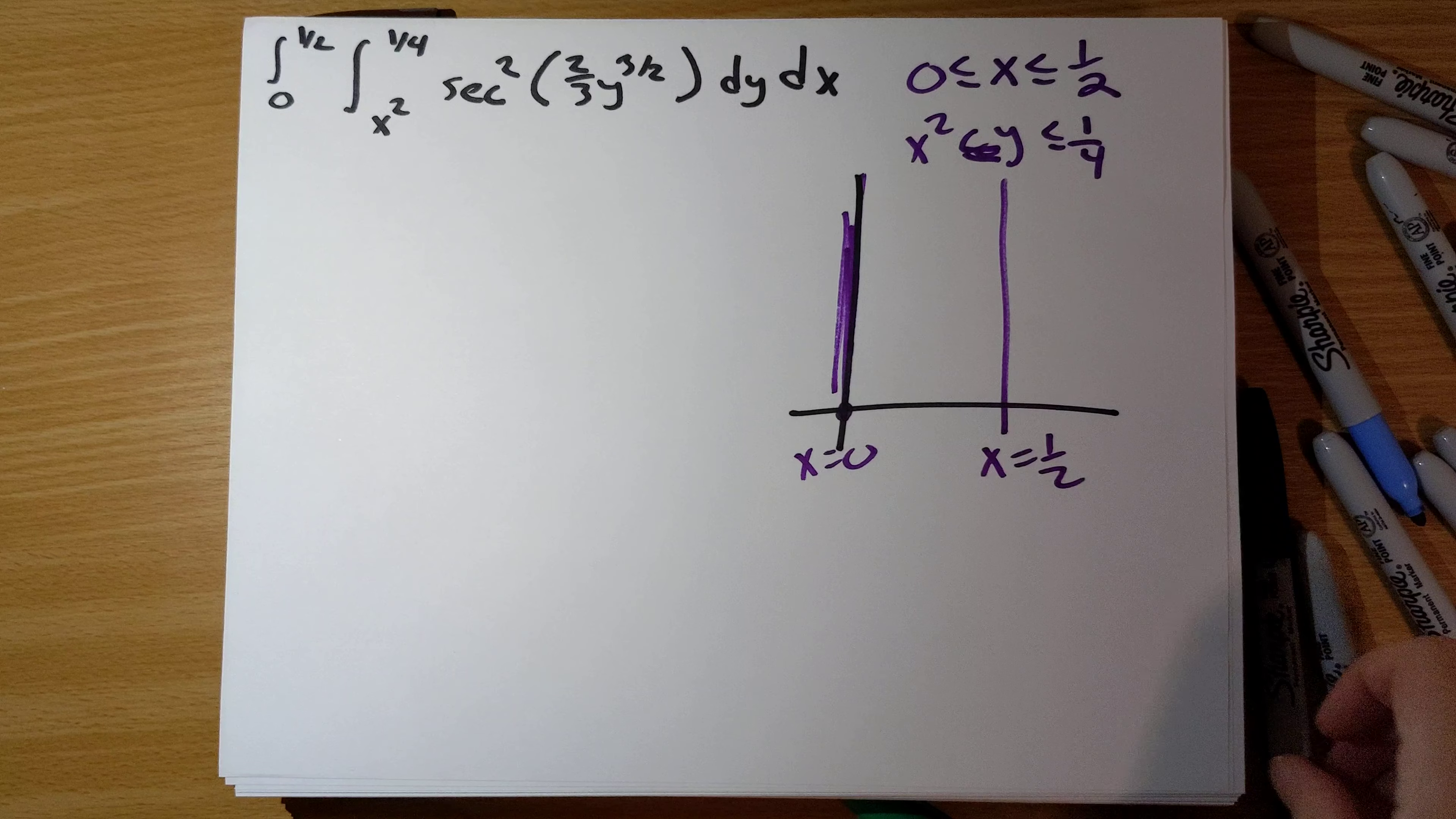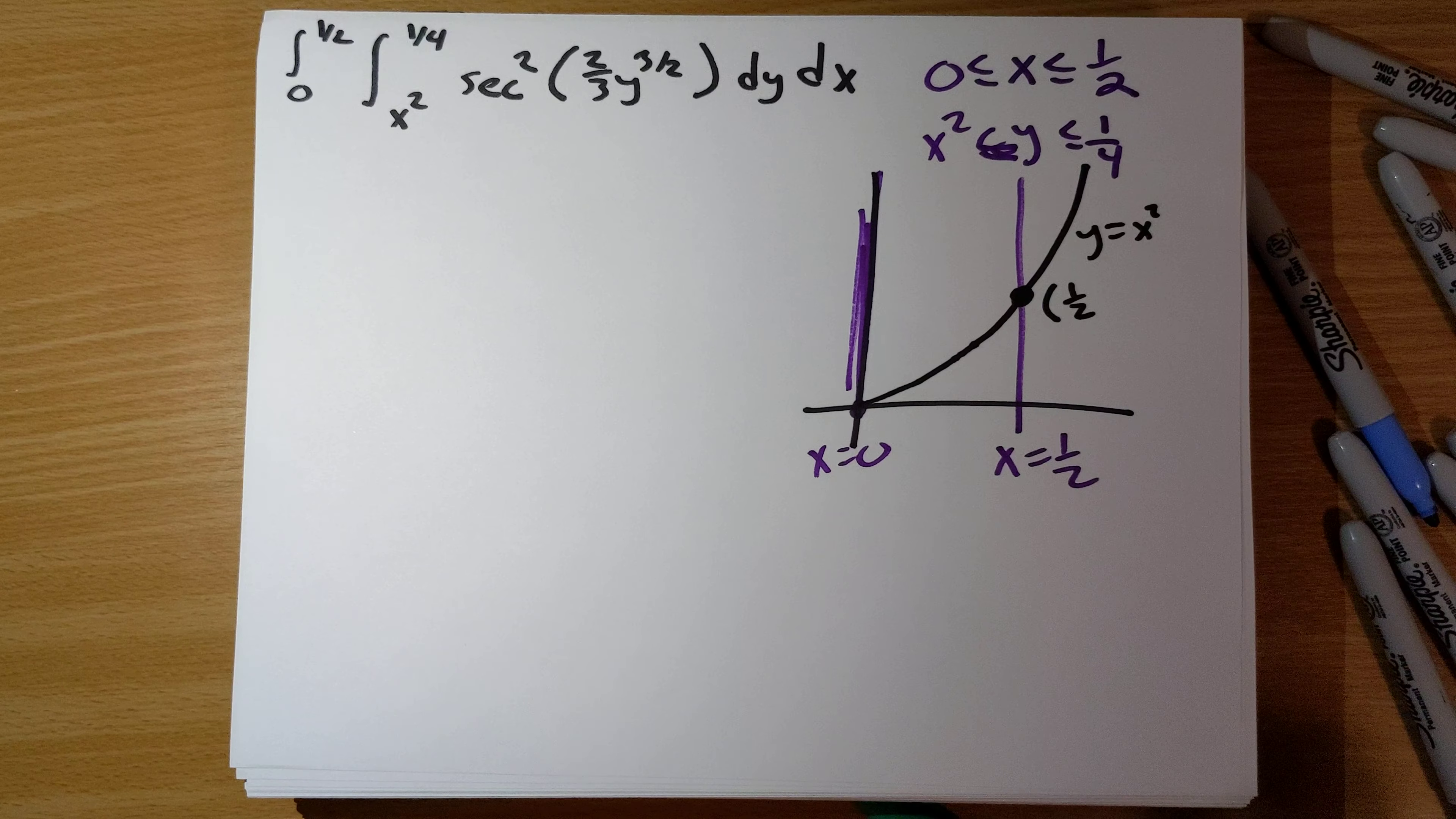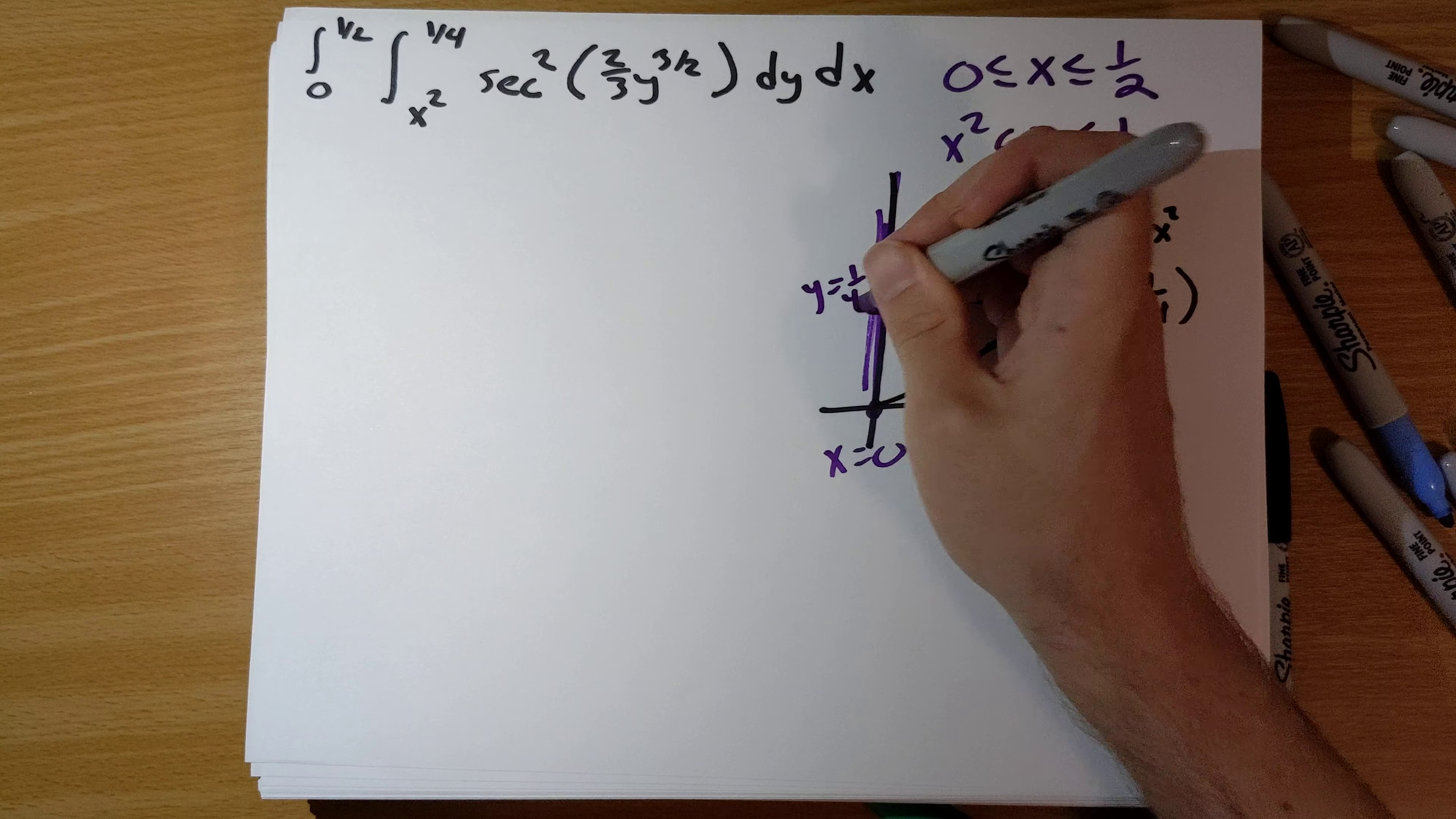We're going to need to draw the curve y equals x squared, which passes through the point when x is 1/2, y is 1/2 squared is 1/4. And the highest y can be is y equals 1/4 here.